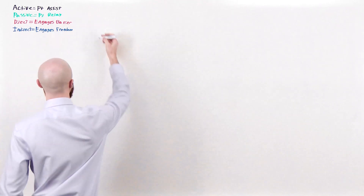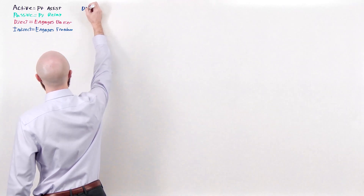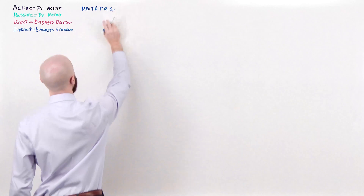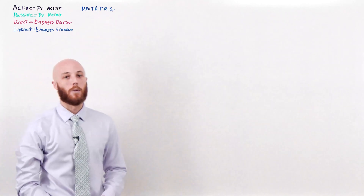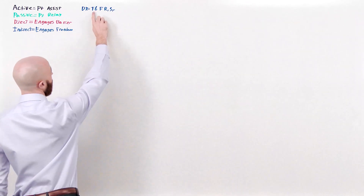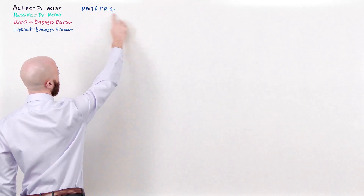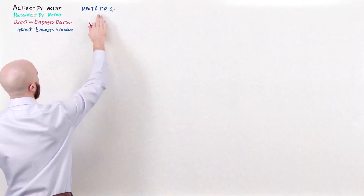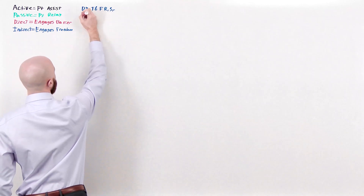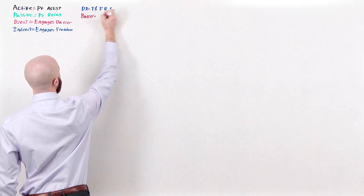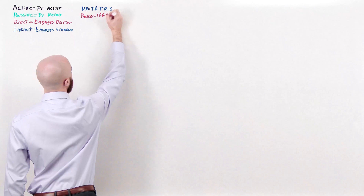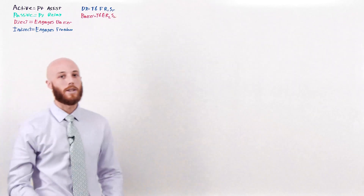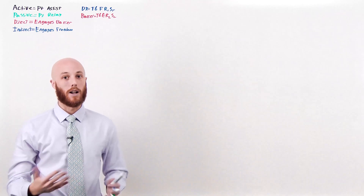Let's give an example. If a patient's somatic dysfunction diagnosis is T6, flexed, rotated right, and side bent right — remember, you always name a somatic dysfunction by what it can do — this is the freedom, where the patient can go easily. On the flip side, the barrier is going to be the opposite: T6, extended, rotated left, and side bent left. These two are opposites of one another, and we'll use this as the basis for comparing all treatment techniques.